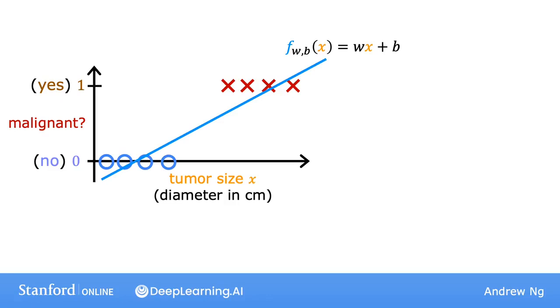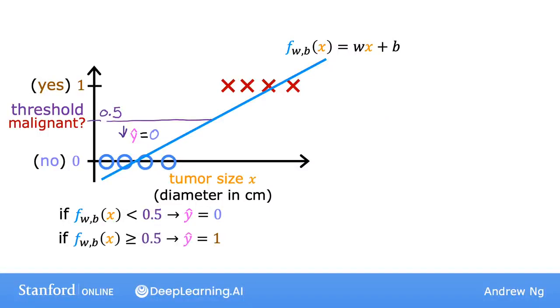Linear regression predicts not just the values zero and one, but all numbers between zero and one or even less than zero or greater than one. But here, we want to predict categories. One thing you could try is to pick a threshold of say 0.5 so that if the model outputs a value below 0.5, then you predict y equals 0 or not malignant. And if the model outputs a number equal to or greater than 0.5, then predict y equals 1 or malignant. Notice that this threshold value 0.5 intersects the best fit straight line at this point. So if you draw this vertical line here, everything to the left ends up with a prediction of y equals 0, and everything on the right ends up with a prediction of y equals 1.